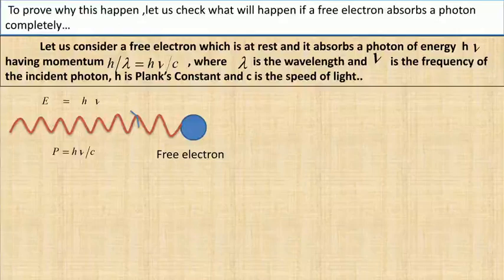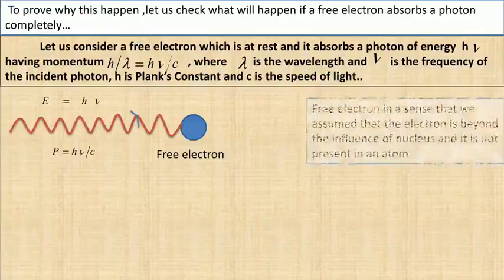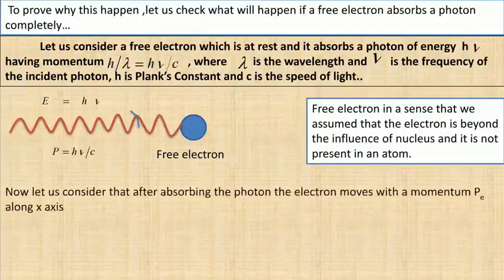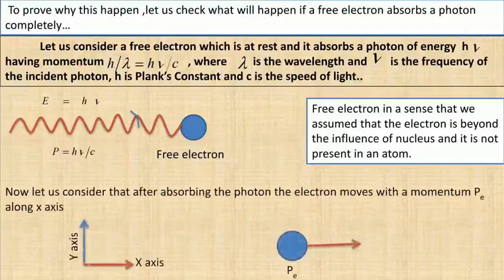A photon strikes a free electron. The electron is free in the sense that it is not bounded to an atom and is beyond the influence of the nucleus. After absorbing the photon, the electron moves with a momentum p_e along the x-axis.